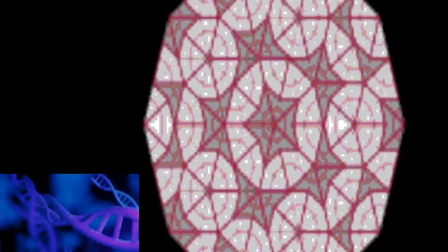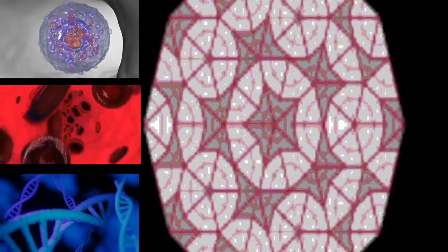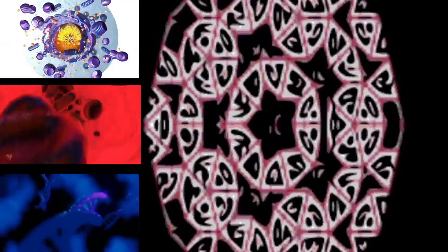Thus, a cell grows (G1), continues to grow as it duplicates its chromosomes (S), grows more and prepares for mitosis (G2), and finally divides (M) before restarting the cycle.